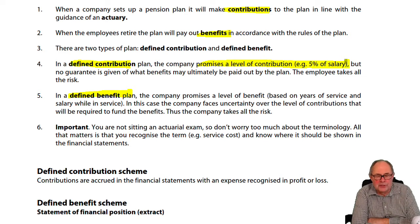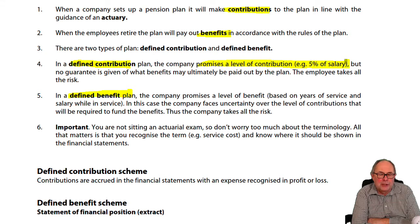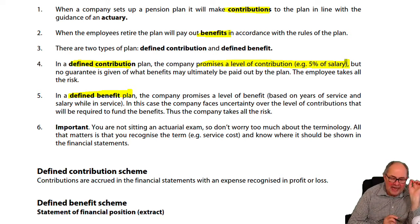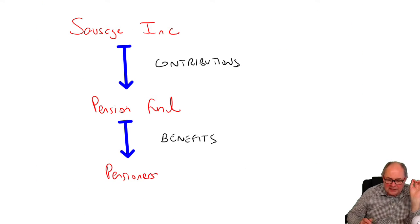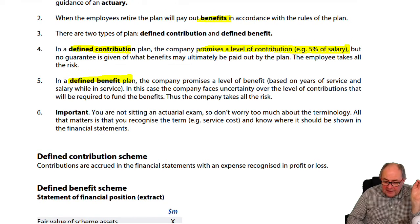It's the other sort that causes the problems. If you have an auntie or uncle who gets angry about another relative and snarls, saying that person's got a government pension, it's probably a defined benefit plan. It's a very different type of plan. This is where no promise is made about how much they will put into the fund, but a promise is made about how much is going to come out.